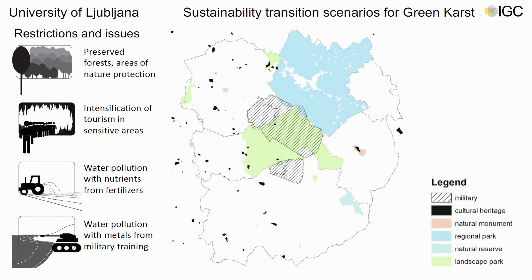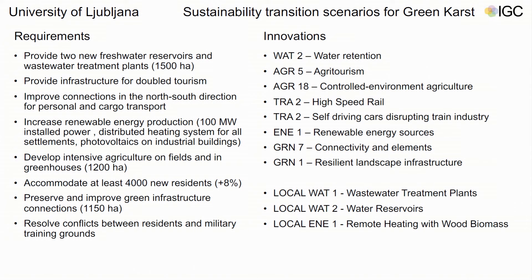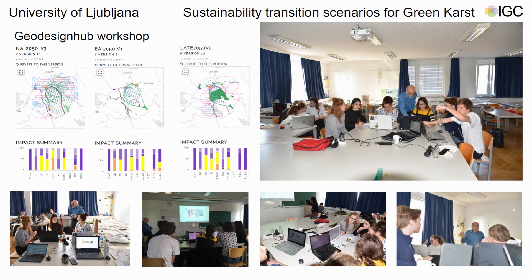The requirements include providing a new freshwater reservoir because of freshwater scarcity and the predicament of global warming — precipitation in this area would get heavier but in shorter periods, causing water shortage. It is also predicted that tourism in the area will double and disperse throughout the region. There are plans to create a new highway going from south to east of the area. The population is not estimated to grow much — just about 8%, which is only 4,000 new residents.